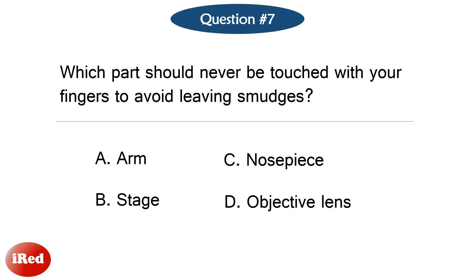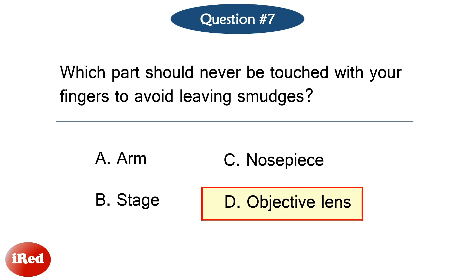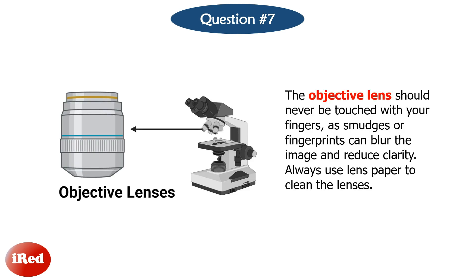Question number 7: Which part should never be touched with your fingers to avoid leaving smudges? The correct answer is letter D, objective lens. The objective lens should never be touched with your fingers, as smudges or fingerprints can blur the image and reduce clarity. Always use lens paper to clean the lenses.